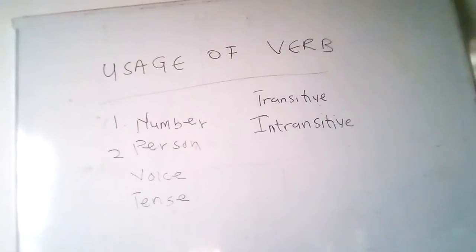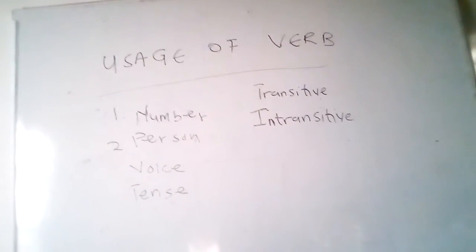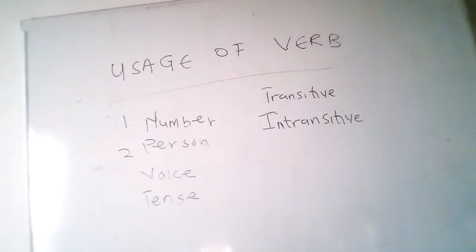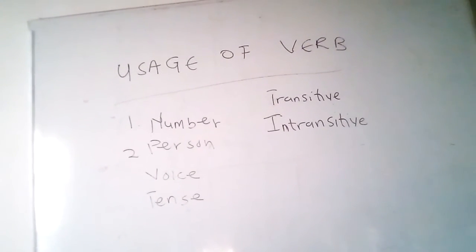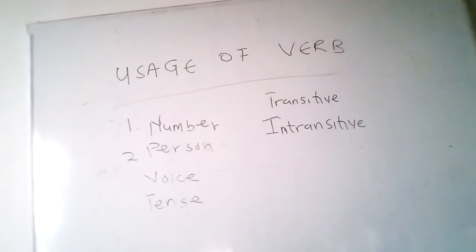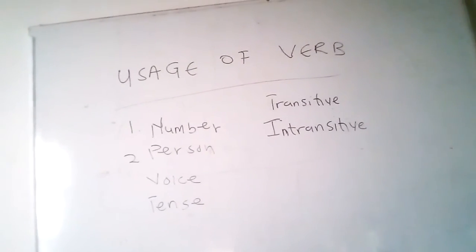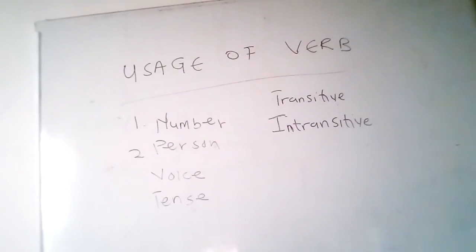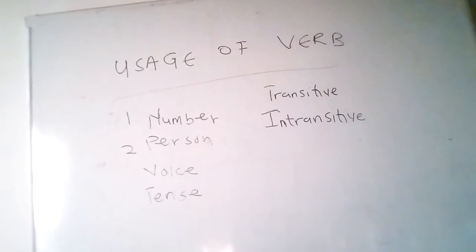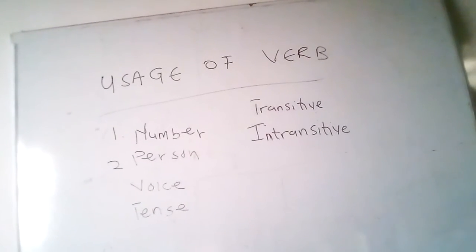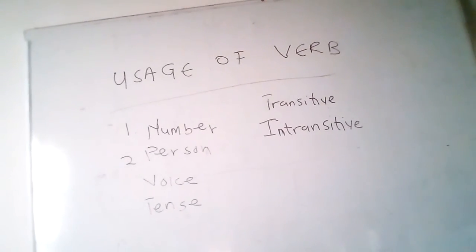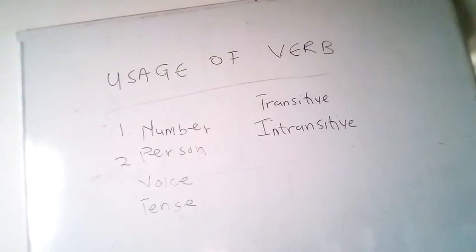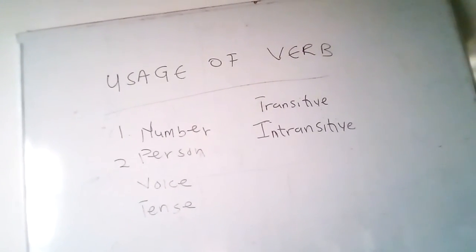An intransitive verb does not direct its action toward anyone or anything. The intransitive verb does not have an object receiving the action. Examples: 'The actor laughed' — no object. 'Everyone slept' — no object. 'The man died' — no object. 'The rain fell heavily yesterday' — no object. 'The priest preached wonderfully' — no object.